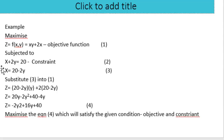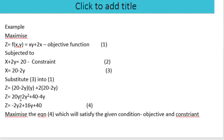First, we solve the constraint for x: x = 20 − 2y. Then we substitute this into the objective function. So substituting x = 20 − 2y gives z = (20 − 2y)·y + 2·(20 − 2y).